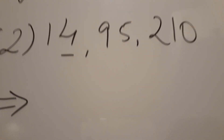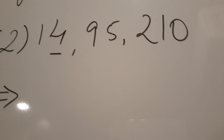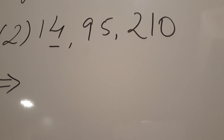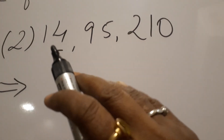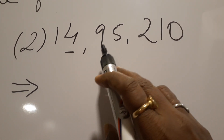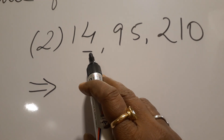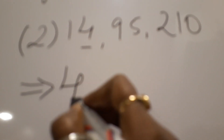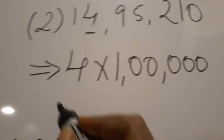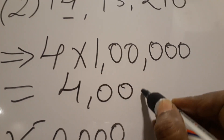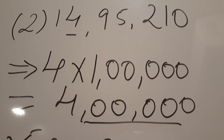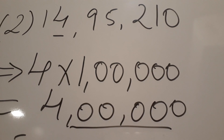Now the second sum. Read the number: fourteen lakh ninety-five thousand two hundred and ten. Four is underlined. Units, tens, hundred, thousand, ten thousand, lakh, ten lakh — so four is in lakhs place. Four into one lakh gives us four lakh. The place value of four in this number is four lakh.